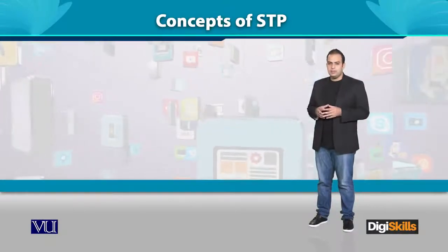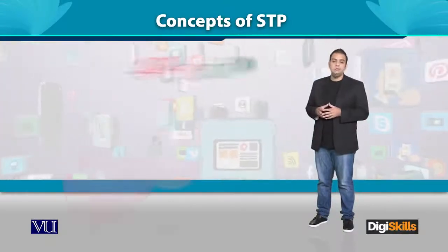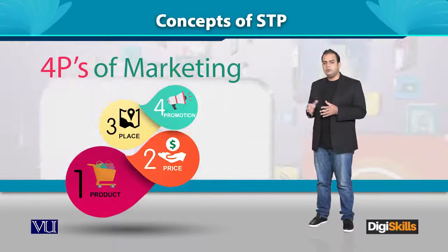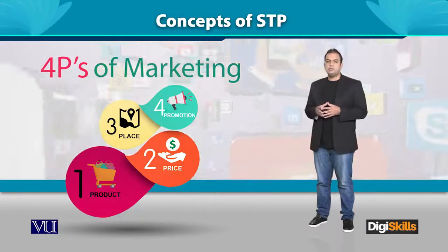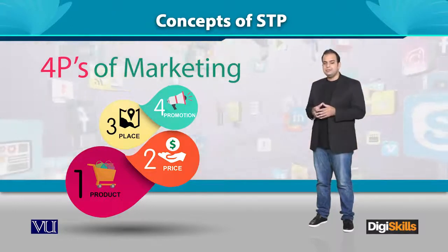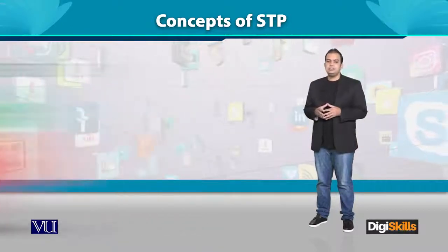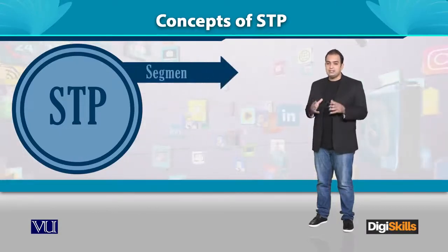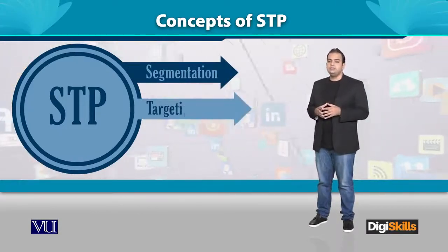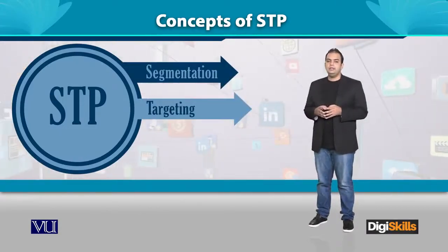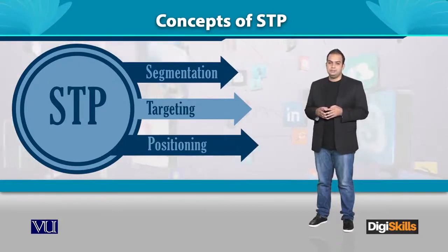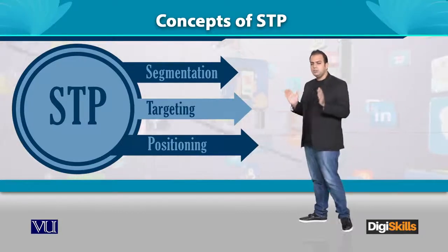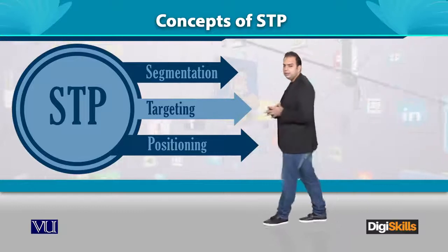Where you get a definition of marketing, you get the four pieces of marketing: need, want, and demand. There is a basic concept of STP, which is a fundamental concept in marketing literature.